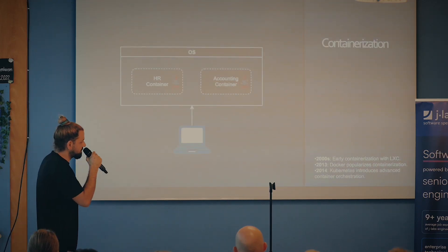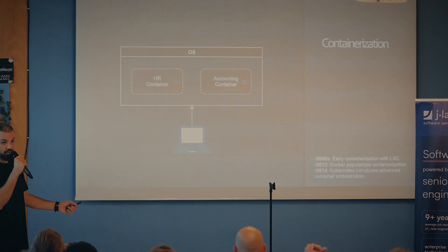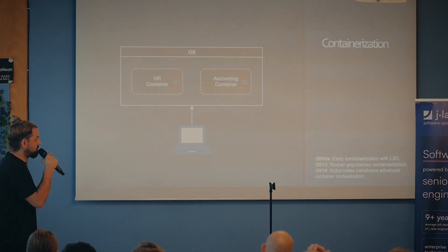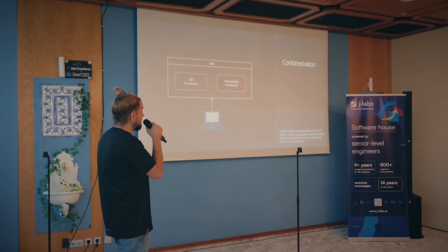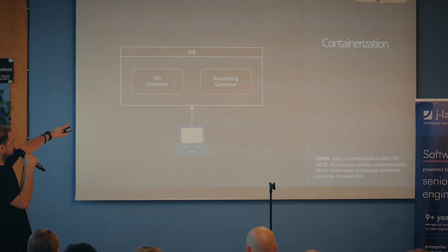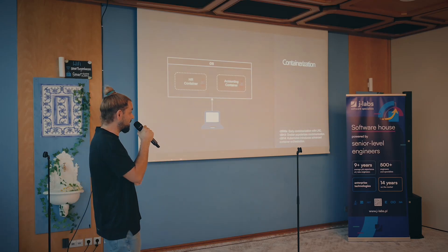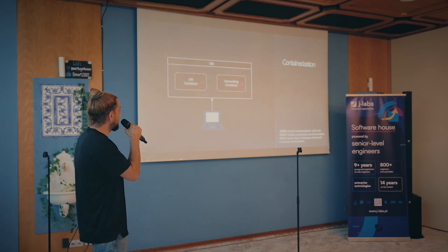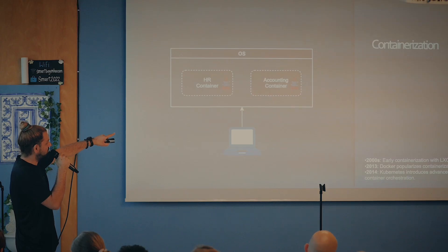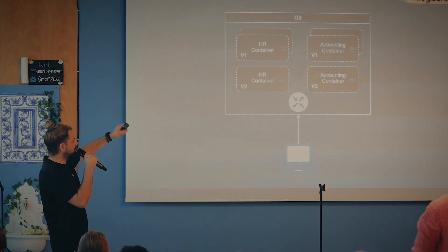Then came the 2000s where early containerization with LXC came into the picture. In 2013, Docker popularized containerization. And by 2014, things like Kubernetes introduced advanced container orchestration. You can see the similarity with monoliths — you still have the HR container and accounting container, like two executables from the operating system's perspective. But the difference is that the Java dependency is now inside every container — it has its own dependency. So cool, right?